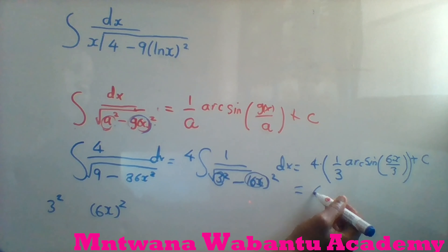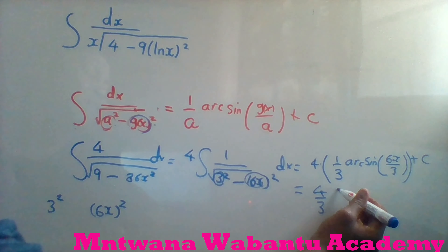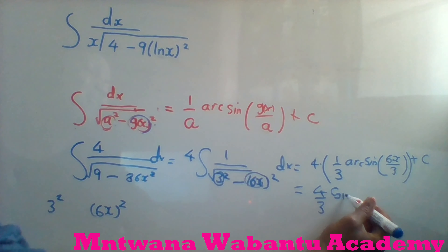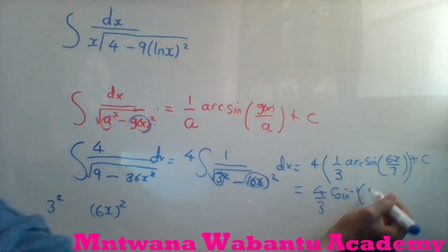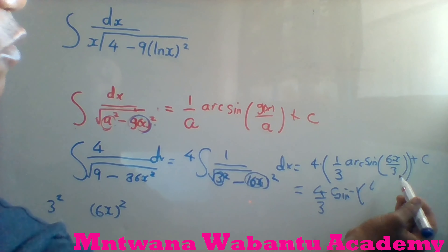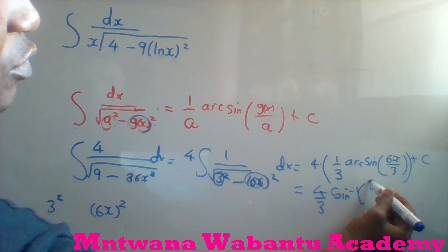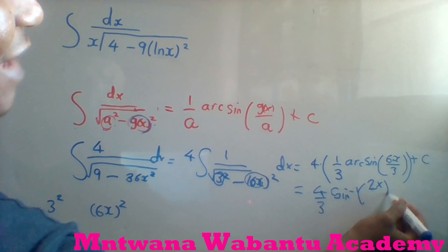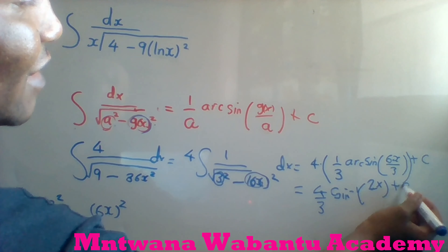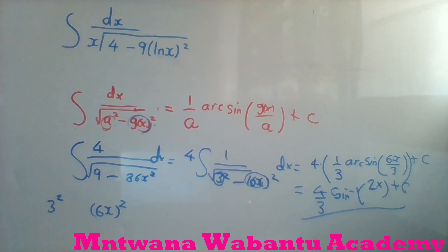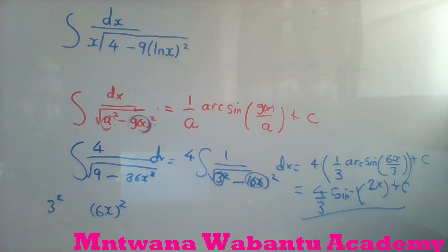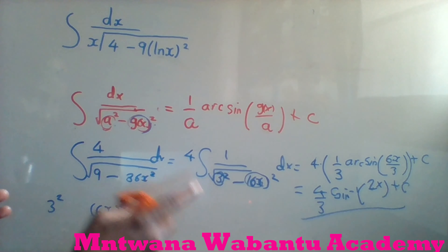So it's going to be 4 times (1/3) arc sine of (6x/3), plus constant. Six divided by three equals two, so the answer is (4/3) arc sine(2x) + C. Note: arc sine and inverse sine are the same thing, so when you see it in the book don't get confused. Now let me show you the tricky version.